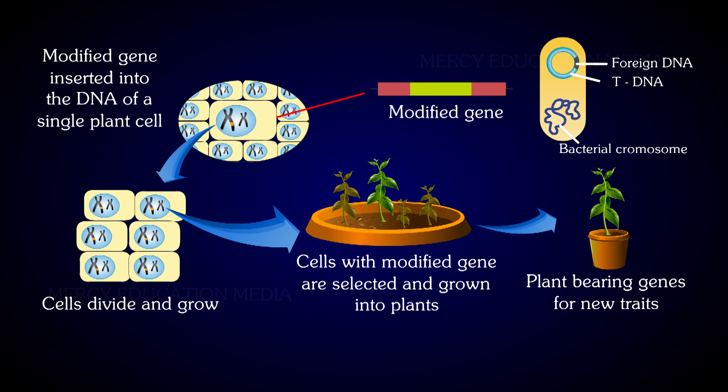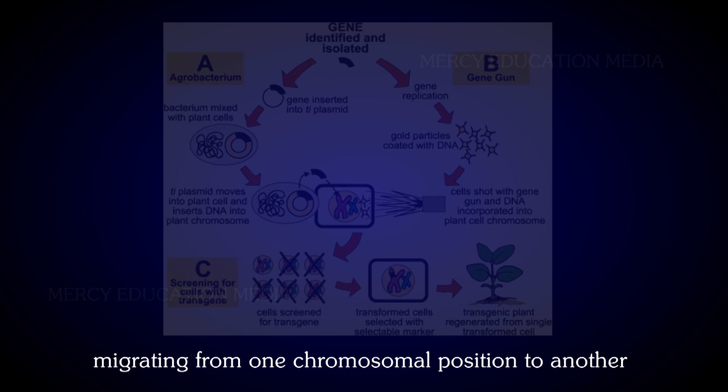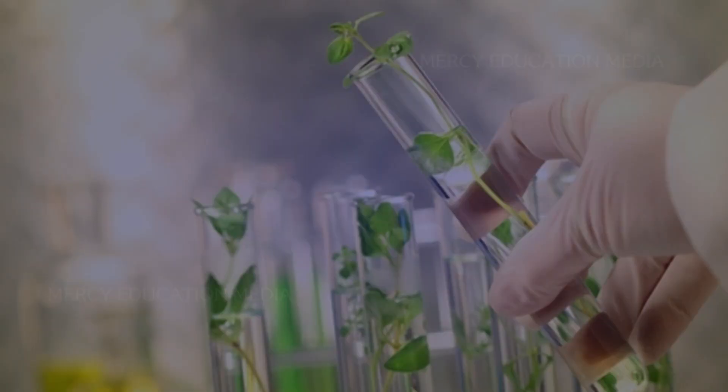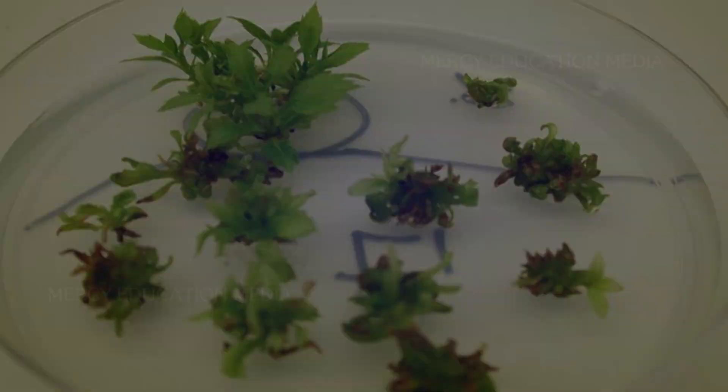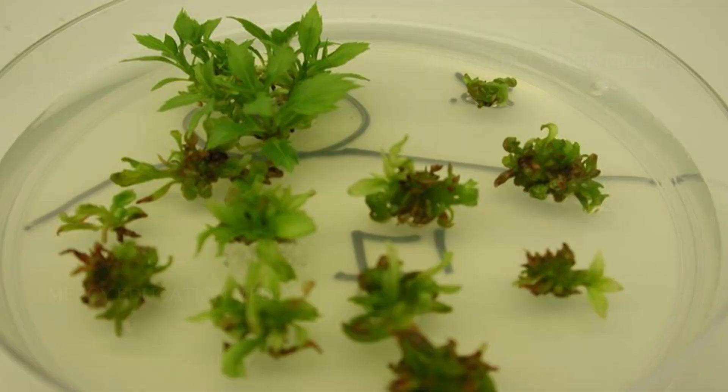Once the T-DNA along with the spliced gene is introduced, it combines with the chromosome of the host cell, where it produces a copy of itself by migrating from one chromosomal position to another. Through tissue culture methods, such plant cells are cultured, induced to multiply, and differentiated to form plantlets.